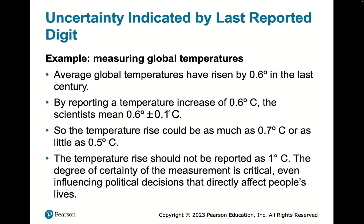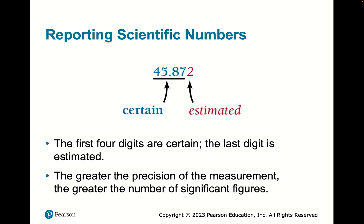For example, global temperatures have risen by 0.6 degrees Celsius in the past century, with an uncertainty of plus or minus 0.1 Celsius — so the range could be 0.5 to 0.7. This is actually statistics: it's typically the standard deviation, meaning we're 68% sure it's in this range. It becomes less likely the temperature rise would be as high as 1 degree Celsius. The last digit in scientific notation is typically where the uncertainty lies.